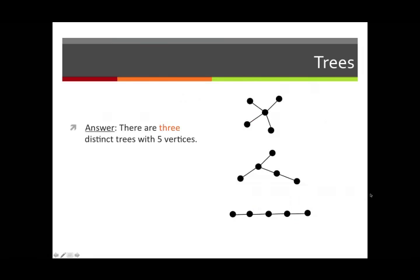Okay, and here they are. It turns out there were only three distinct trees with five vertices. You can either have a vertex of degree 4, as shown here, and there's only one possibility. Or a vertex of degree 3, and again, you'll see that there's only one possibility. Or all vertices having degree 1 or 2, in which case you're forced to draw what's shown at the bottom here. Those are all the possibilities.